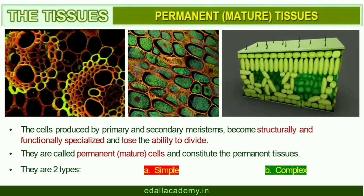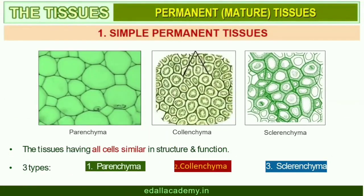Type 2: Permanent Tissues. The cells of permanent tissues do not generally divide further. Permanent tissues having all cells similar in structure and function are called simple tissues. Permanent tissues having many different types of cells are called complex tissues. A simple tissue is made of only one type of cells. The various simple tissues in plants are parenchyma, collenchyma, and sclerenchyma.